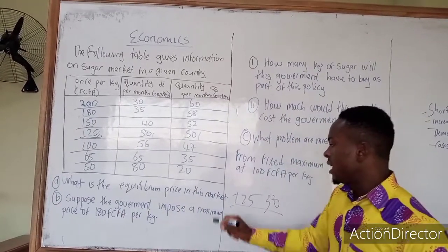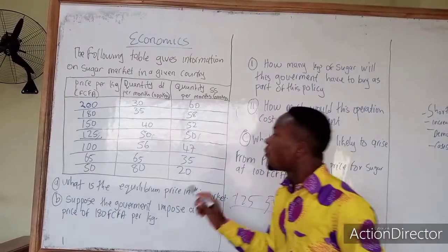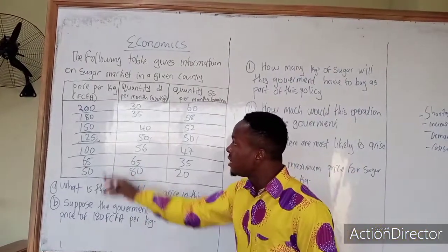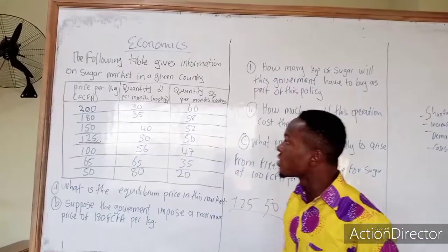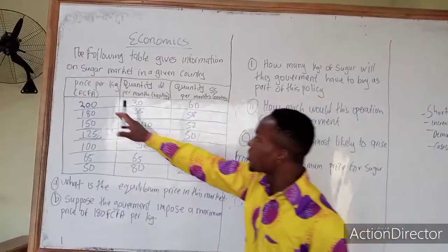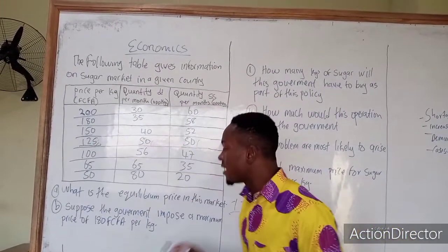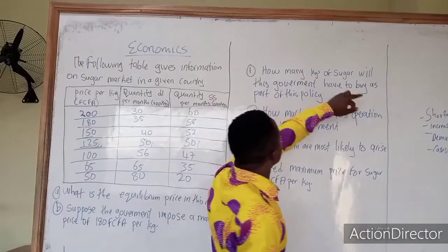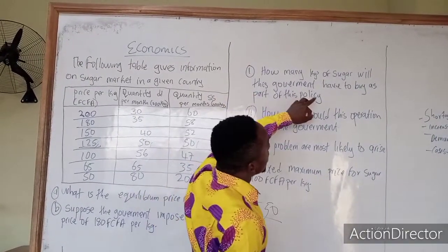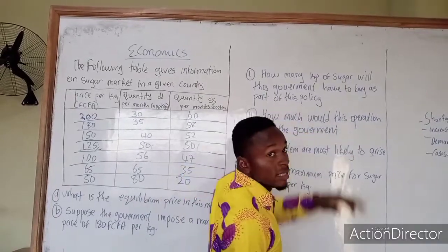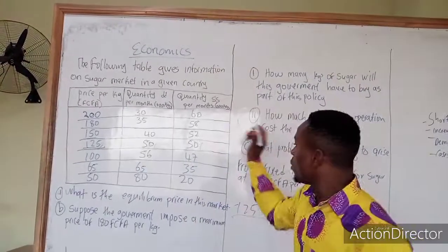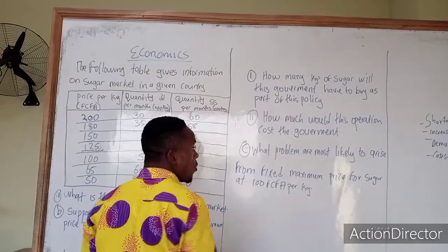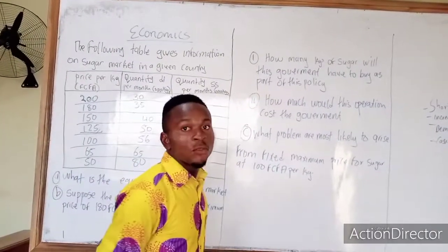Suppose the government imposed a maximum price of 180 Francs CFA per kilogram — that is 180,000. The next part of the question asks: how many kilograms of sugar will the government have to buy as part of this policy? We need to calculate how many kilograms of sugar the government will buy given the government has imposed a price of 180.